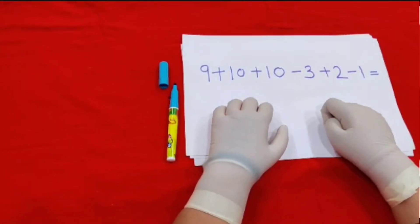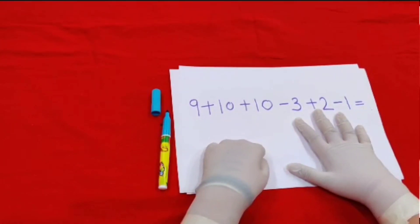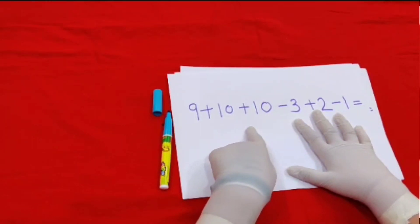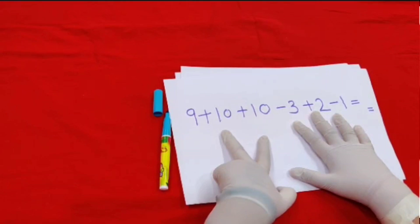So let's start it. If we want to make 9, we have to do this, and plus 10, this 10 and this 20, minus 3.